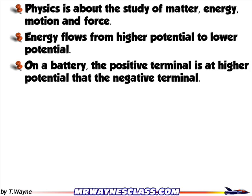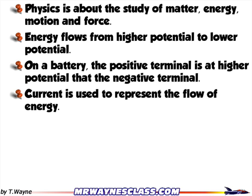On a battery, the positive terminal is at a higher potential than the negative terminal. And energy is delivered by charges. So we define current as a way of representing the flow of the charges that deliver the energy.